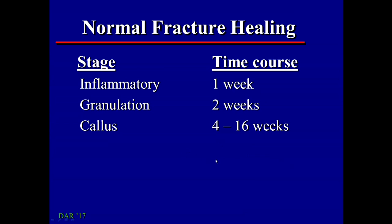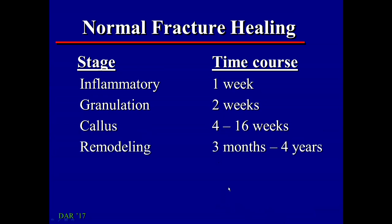The chondroblasts form osteoblasts, and the osteoblasts will turn that cartilage eventually into bone. That will at first be woven bone or immature bone, and then through the processes of remodeling and reshaping, that bone will become more mature over time, form lamellar bone, and reestablish the medullary space.